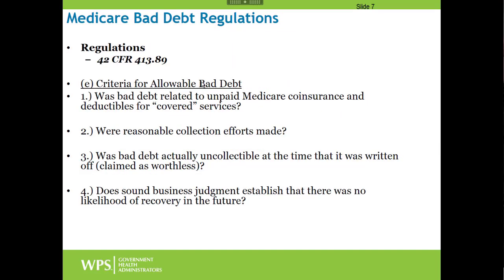The regulations at 42 CFR 413.89 detail four key criteria for allowable bad debt. First, was the bad debt related to unpaid Medicare coinsurance and deductibles for covered services? Second, were reasonable collection efforts made? Third, was the bad debt actually uncollectible at the time it was written off — claimed as worthless? Fourth, did sound business judgment establish that there was no likelihood of recovery in the future? Note that number four is not asking for an absolute guarantee — only that sound business judgment establishes no likelihood of recovery.